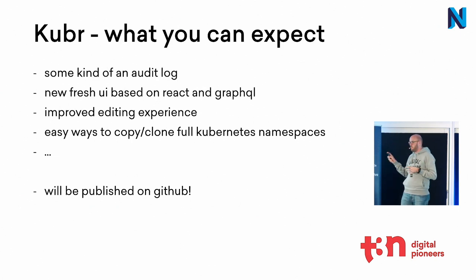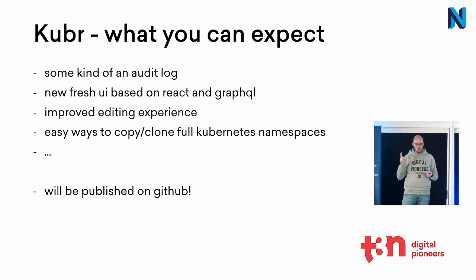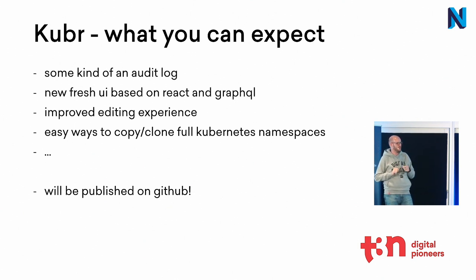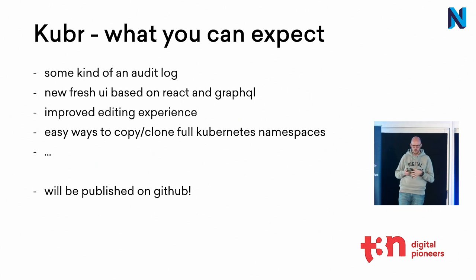What you can expect: first of all, we will publish it on GitHub, but we have some things to do. We also want to add an audit log so you can see who changed a variable and have some kind of history. We're working on a new fresh UI — what you've just seen is just a quick theme we used while kickstarting fast. We are currently working on a new UI based on React and some GraphQL APIs. We also want an inline YAML editor to make editing easier, and an easy way to copy or clone full namespaces — for example, I need a copy of my staging environment to check out another branch. You can just spin it up.